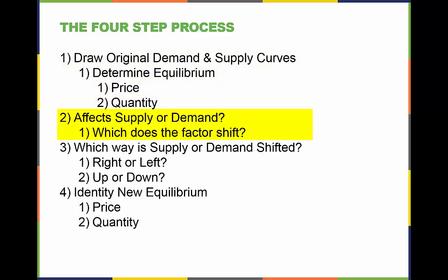Step number two: we need to determine if the factor is affecting supply or demand — in other words, which does the factor shift? Step number three: we need to determine which way the factor is shifting supply or demand — to the right or to the left, up or down.